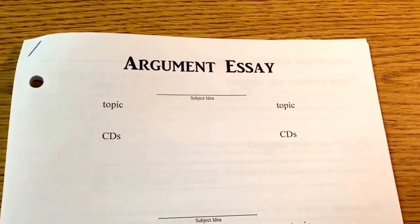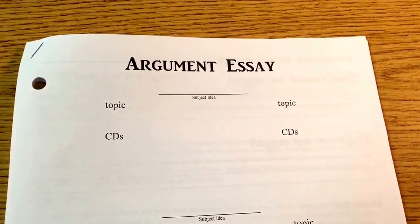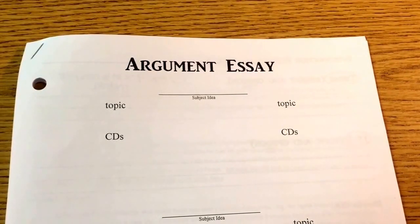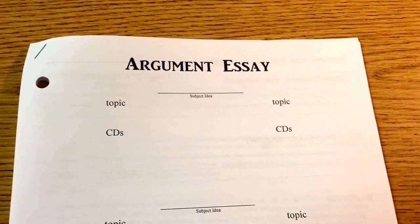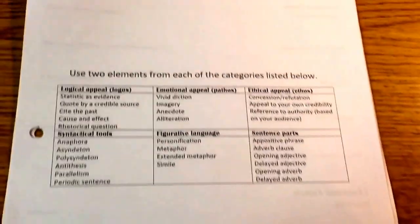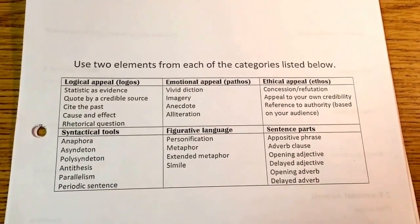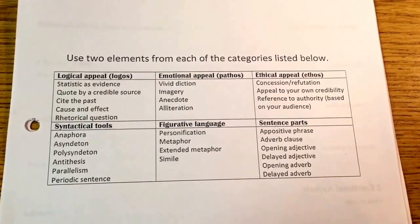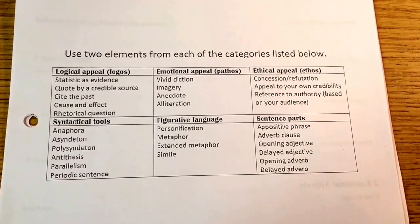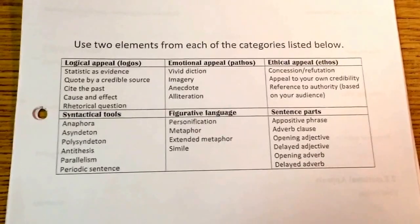Today we're going to continue with our argument essay, and we're going to add some rhetorical tools to the introduction, the two body paragraphs, and the conclusion paragraph that we've already written and that you've typed in pages. So let's go ahead and turn to page number five. Since we've been working with Dr. Martin Luther King's rhetorically rich pieces, you know these rhetorical tools. Plus, we've also used many of them in our infomercial.